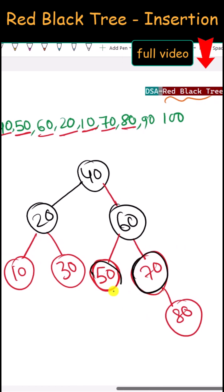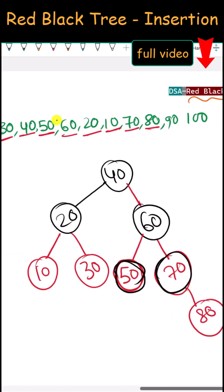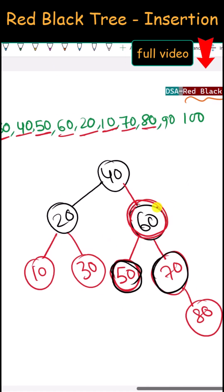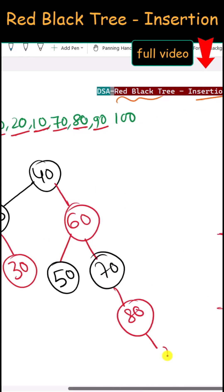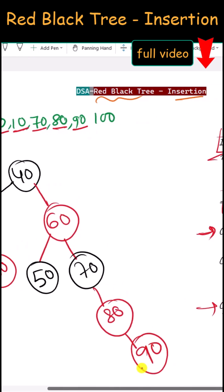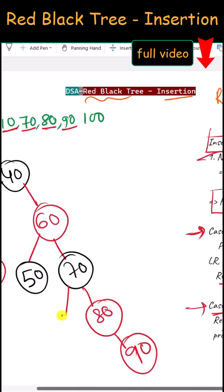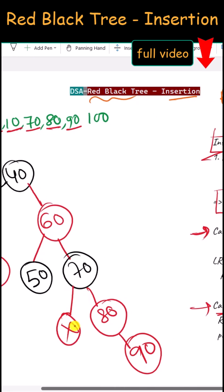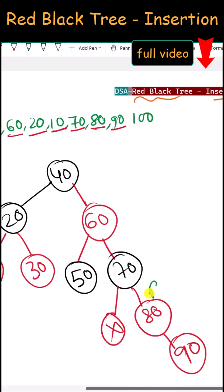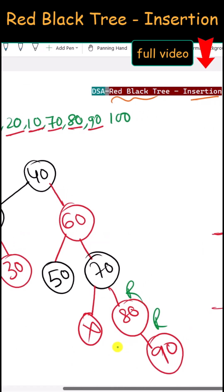80 is inserted here and this time we have a red uncle, so we recolor the parent and uncle to black, and the grandparent becomes red.